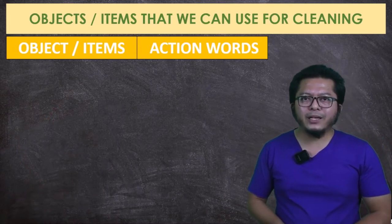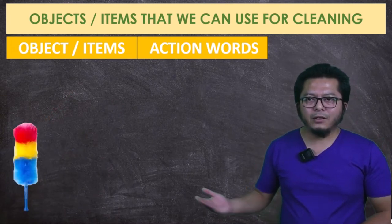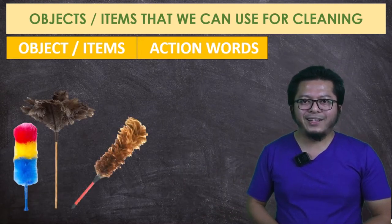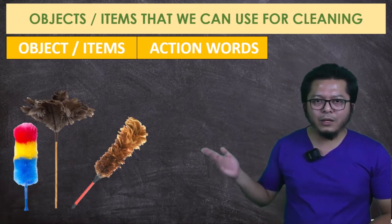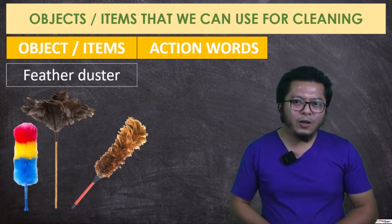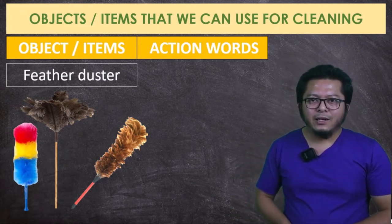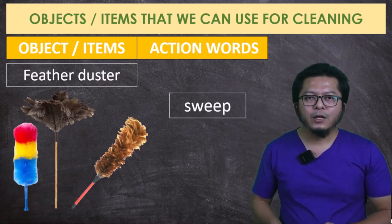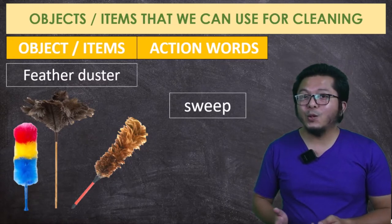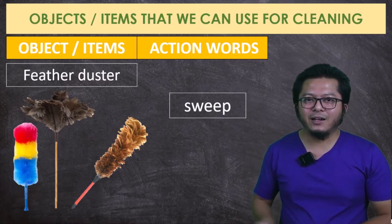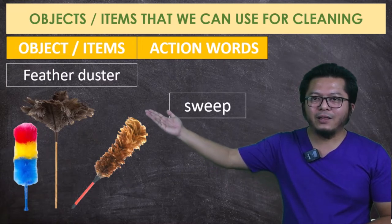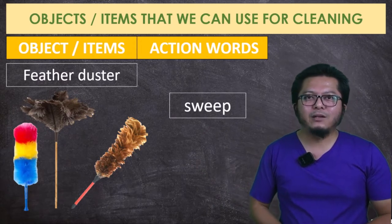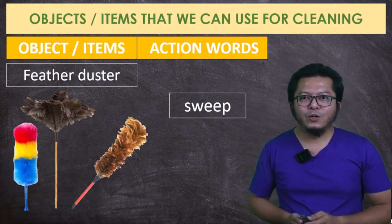Another object we can use for cleaning is a feather duster. The action word that comes with a feather duster is to sweep. To sweep what? To sweep dust. As you can see from the word feather duster, dust means habuk in Malay. So you use a feather duster to sweep dust.